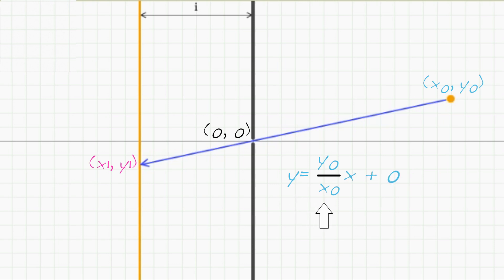Or, simply, Y equals Y0 over X0 times X. Now the point we are looking for, X1, Y1, is also on this ray. So it must satisfy that line equation. Meaning, Y1 equals Y0 over X0 times X1.